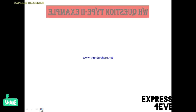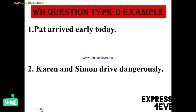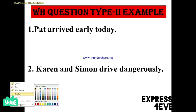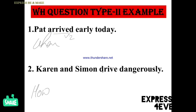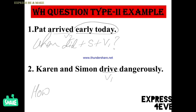For Type 2, I have brought two examples: Number 1 — 'Pat arrived early today,' and Number 2 — 'Current and Simon drive dangerously.' For number 1, the WH word is 'when,' because 'when' helps us get timing information. The verb 'arrived' is V2, indicating simple past tense, so we use 'did.' The rule is: WH word, then 'did,' then subject, then V1, then question mark — avoiding the answer part 'early today.' The question becomes: 'When did Pat arrive?'